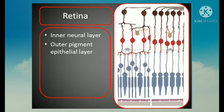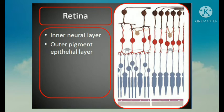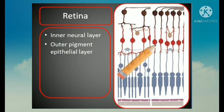The cone cells respond better to bright light and are responsible for visual acuity and color vision. They are most numerous in the central region of the retina. The rods, on the other hand, predominate in the peripheral part of the retina. They respond to poor light and are important for peripheral vision.